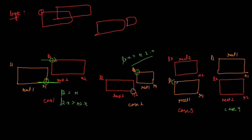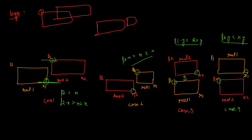For case three we check the y values since we are checking up and down. If L1.y is less than R2.y, that means they are not overlapping — there is some distance between them. Similarly for case four, we check L2 and R1: if L2.y is less than R1.y, then we are done. So we have conditions for all four cases. If our program satisfies any of these conditions, the rectangles are not overlapping and we return false. If none of the conditions is satisfied, the rectangles definitely overlap, so we return true.